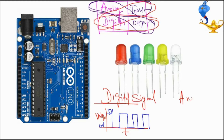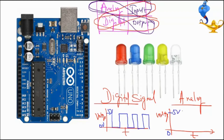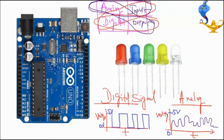We say a signal is analog when, drawing the same graph between voltage versus time, between the two limits of 0V and 5V, the signal can have infinite possible combinations — any possible value between 0 and 1. That signal we call an analog signal.